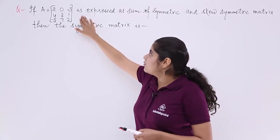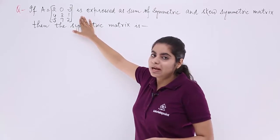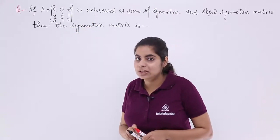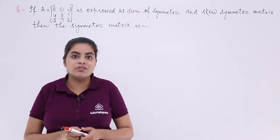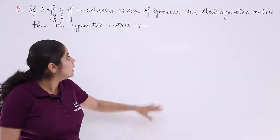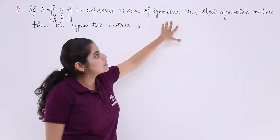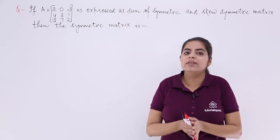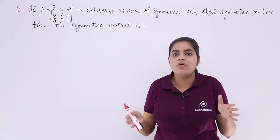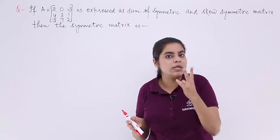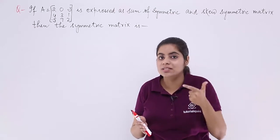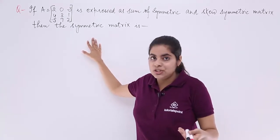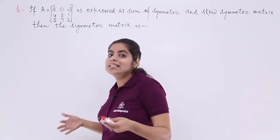The question is: if A is equal to a given matrix which has 3 rows and 3 columns — a square matrix of order 3 — and it is expressed as the sum of a symmetric and a skew-symmetric matrix, then what is the symmetric matrix?